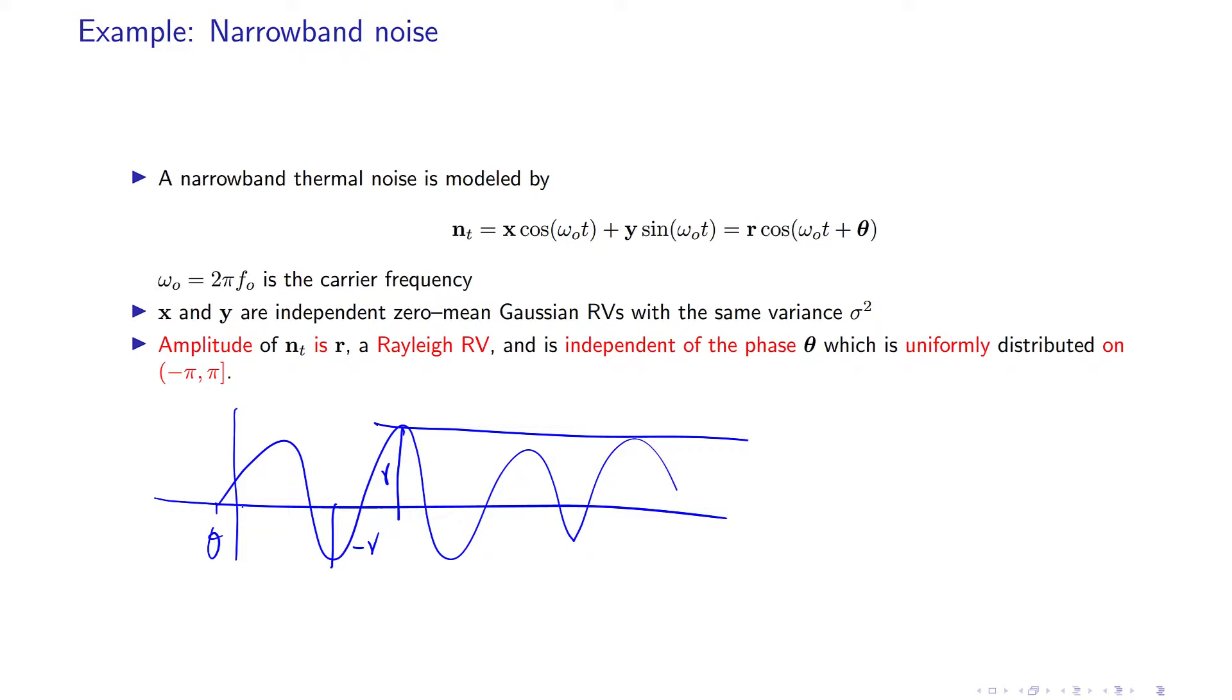At time t equals zero you are at, say, here where theta is negative. And r has a Rayleigh distribution. r and theta are independent, and theta has a uniform distribution in this interval.